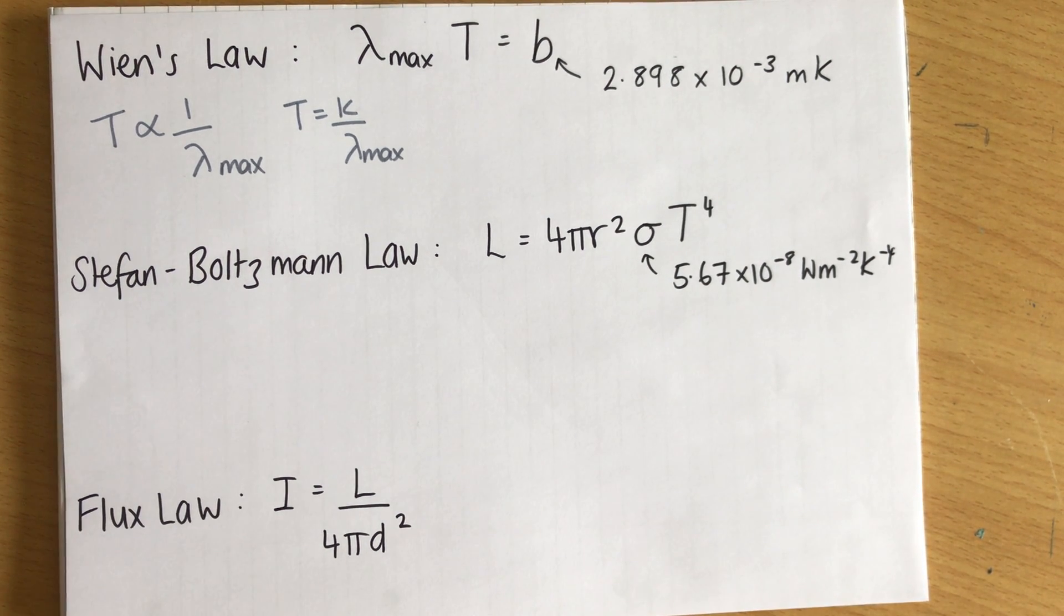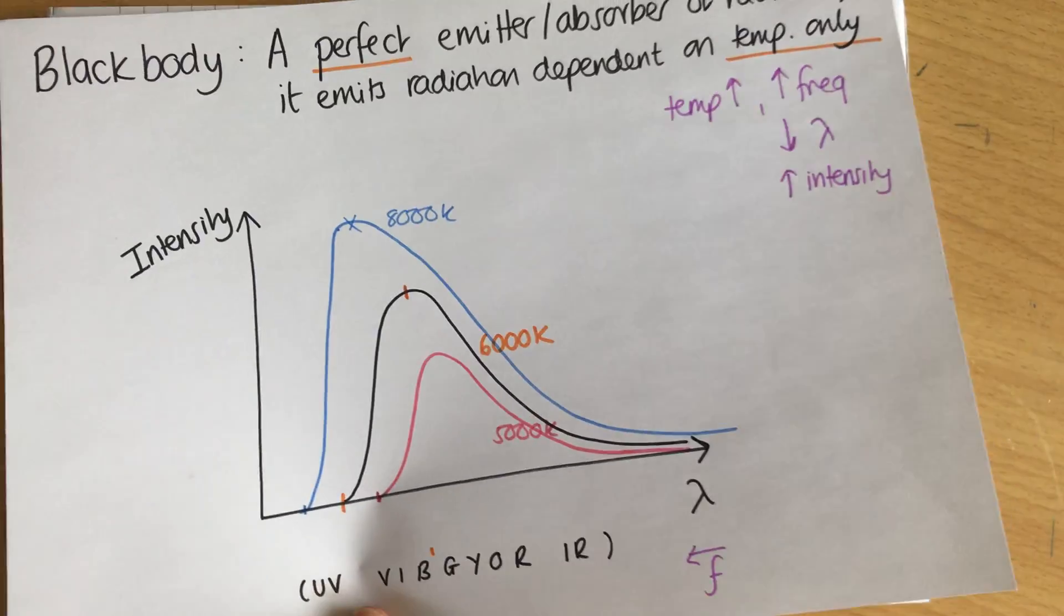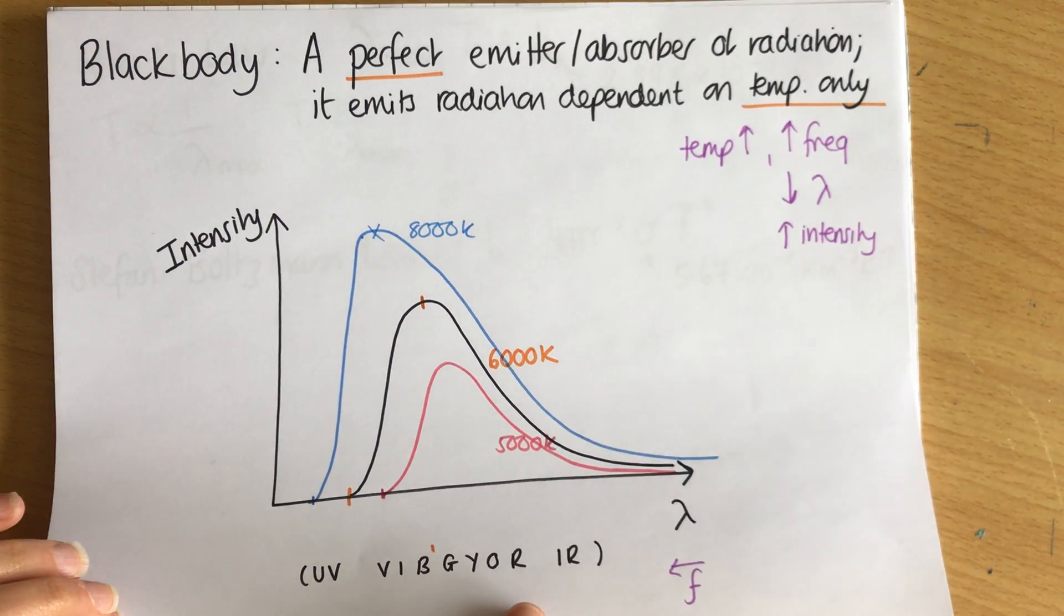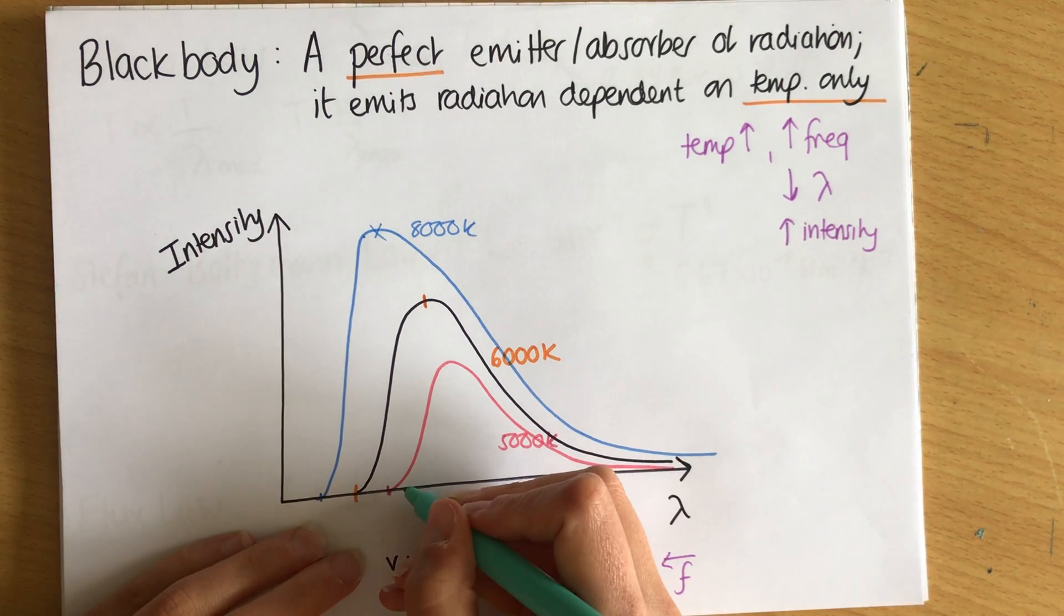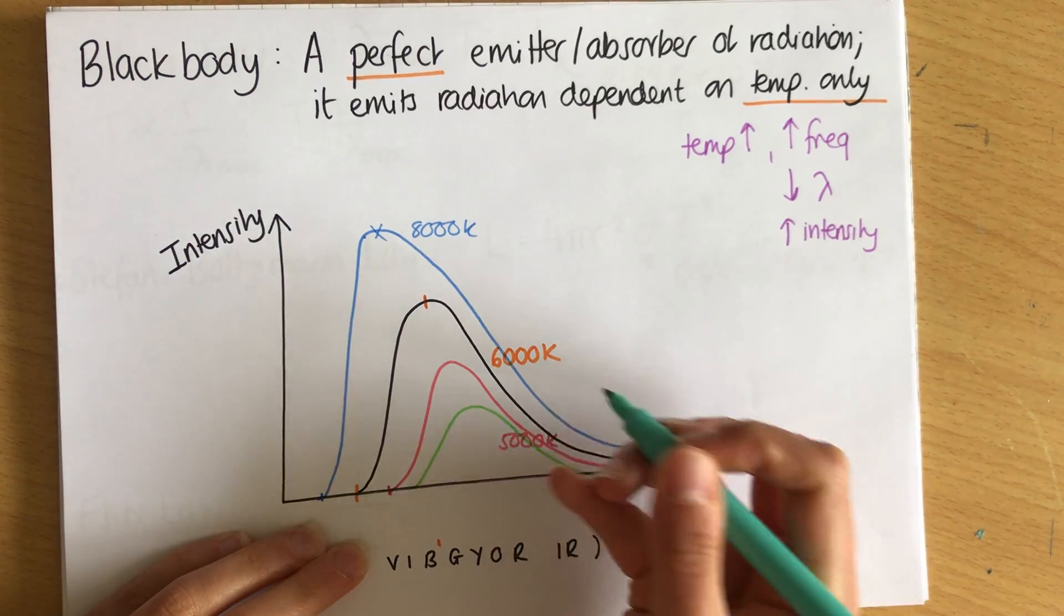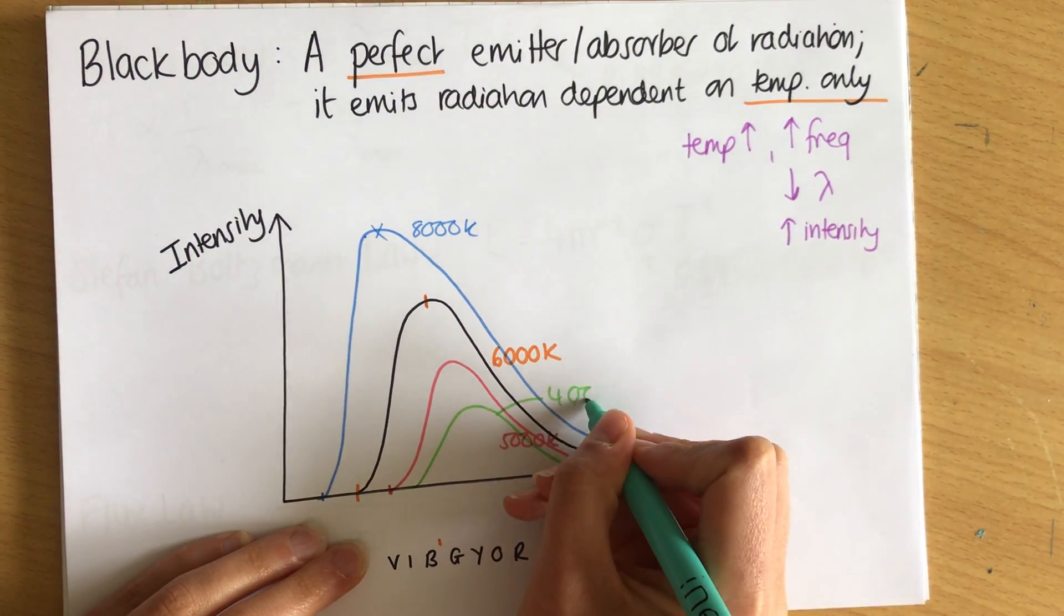Now the Stefan Boltzmann law comes from something else, it comes from the idea of the area under the curve. So I'm going to just quickly draw another curve in, because I didn't think this through, like this, this is going to be my 4000 kelvin curve.